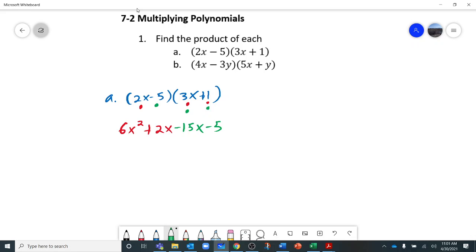Now we can simplify this. 6x squared, we can't do anything with. Positive 2x and negative 15x gives us negative 13x, minus 5. That is the final answer for A: 6x squared minus 13x minus 5.